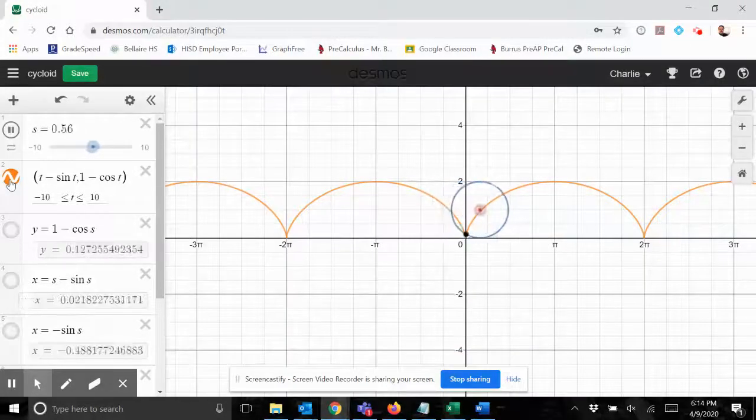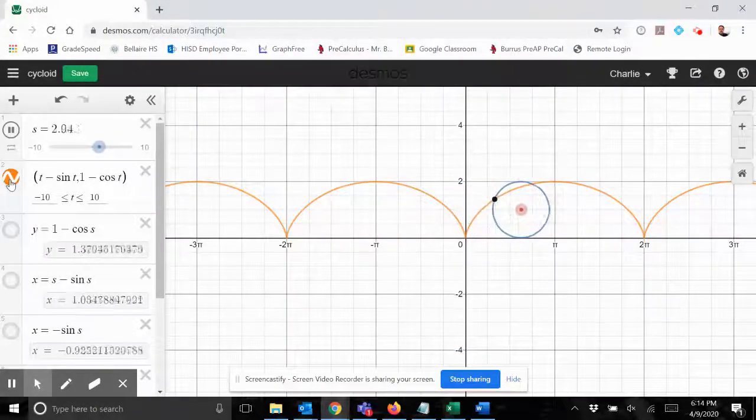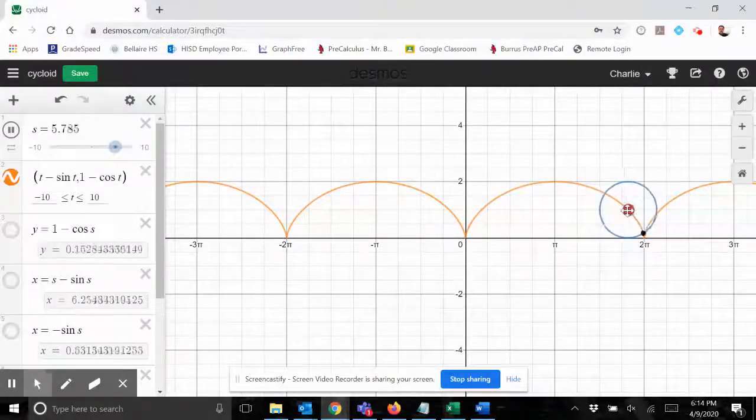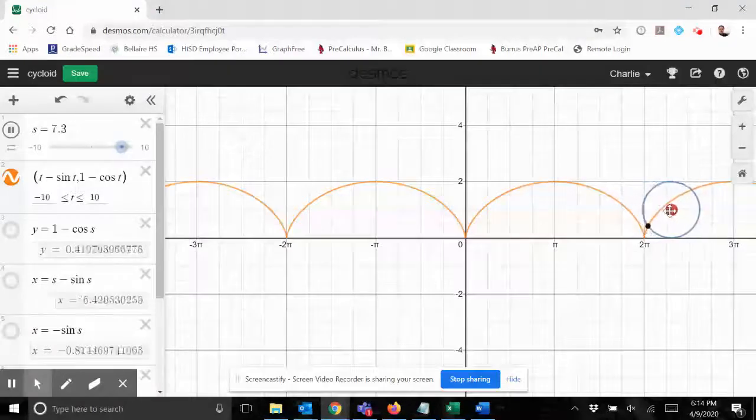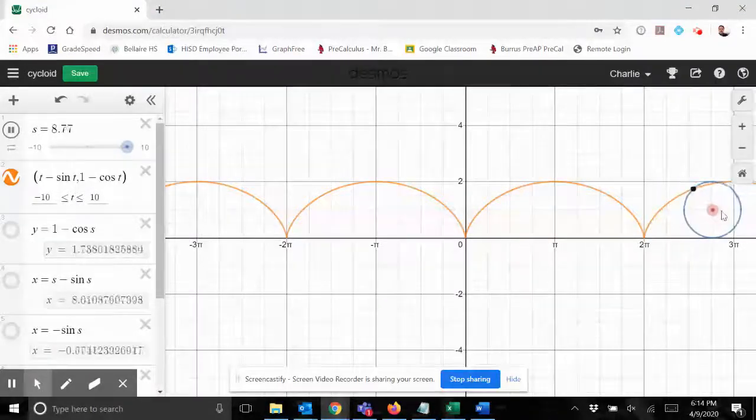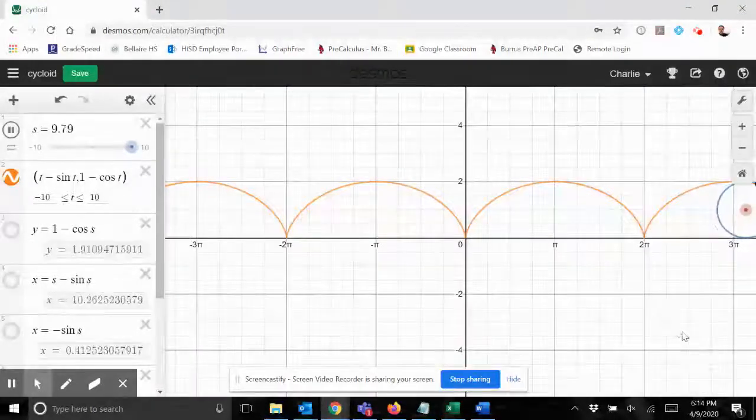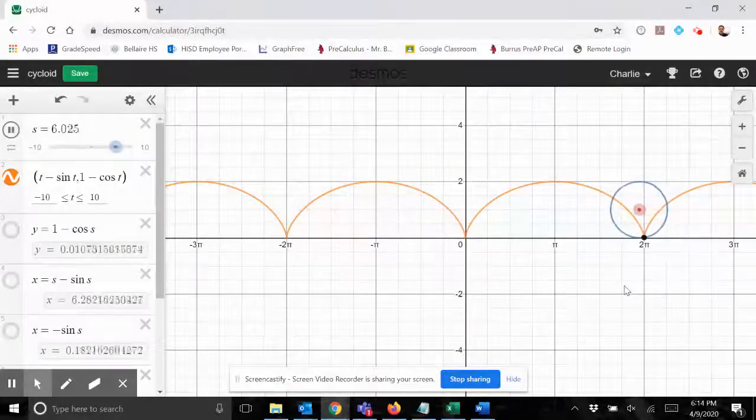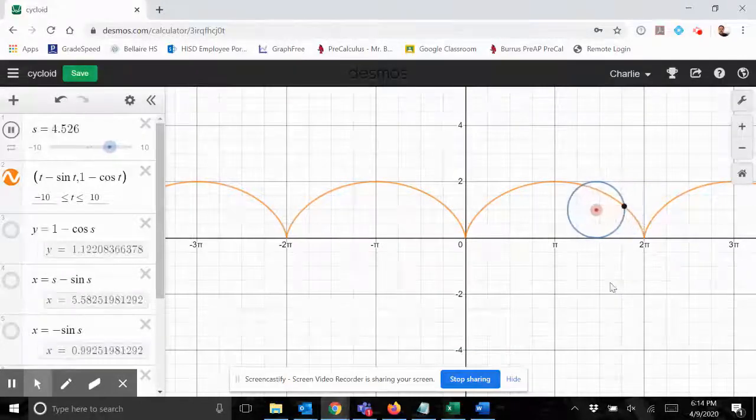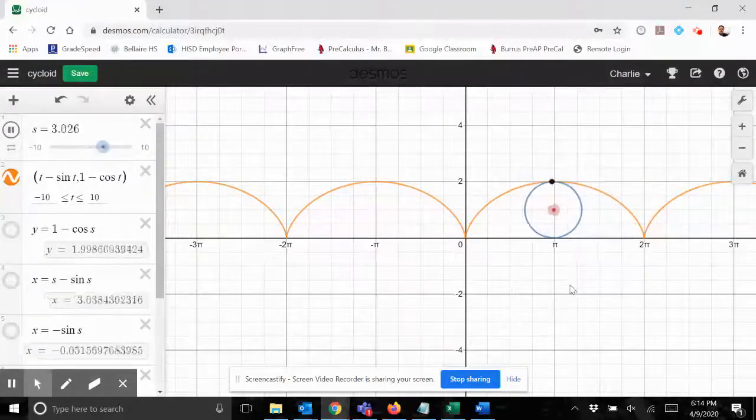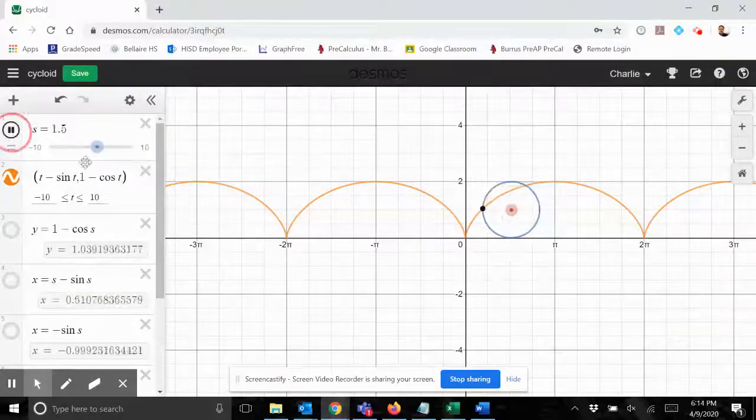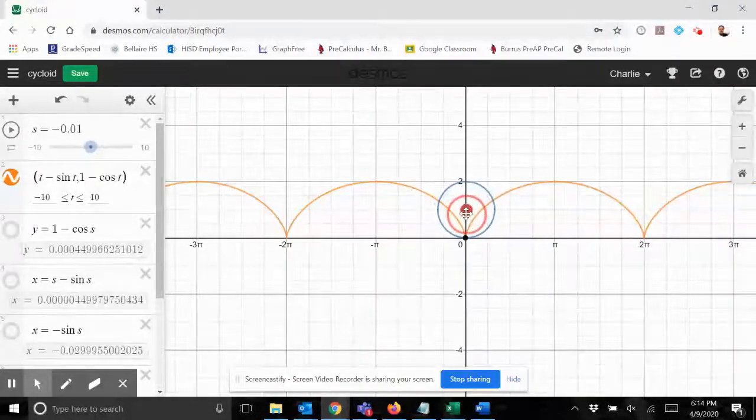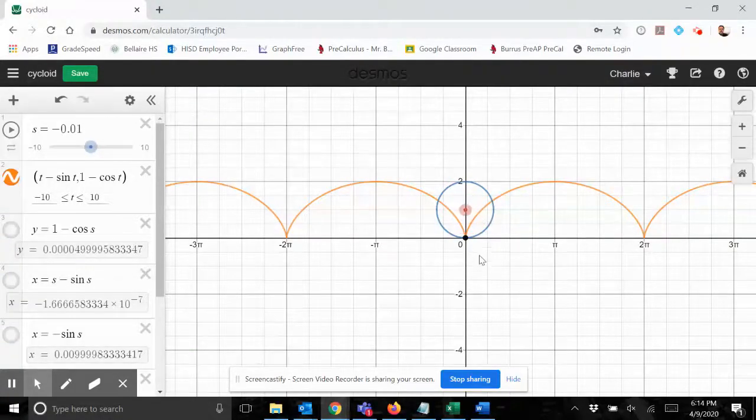We'll take a variable t, a parameter t, and then we'll define x to be a function of that t and y to also be a function of that t. So what shall we use for t? Well my suggestion is the center here - the center of this circle is moving along.